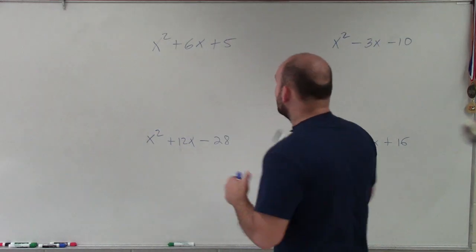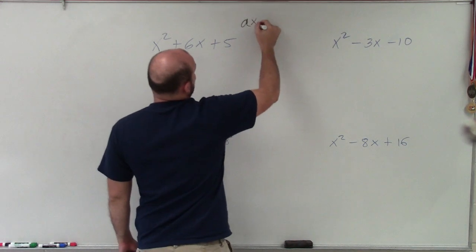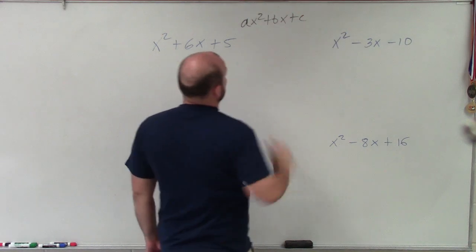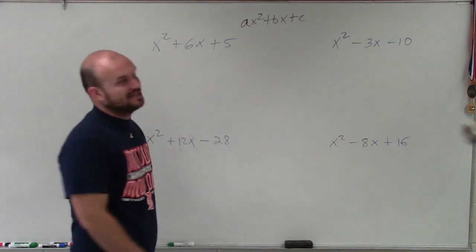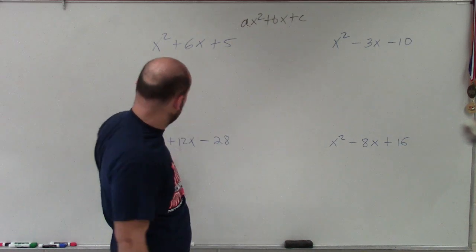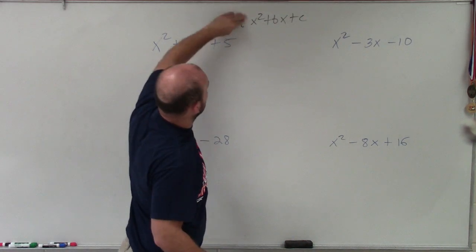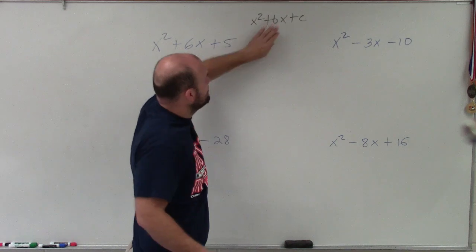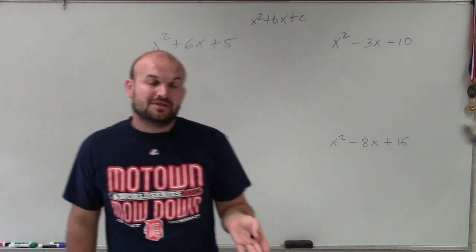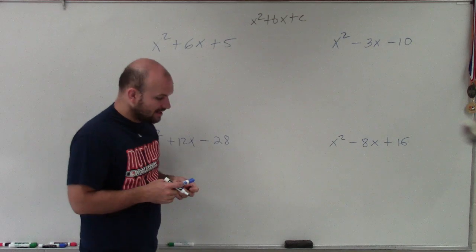To understand the diamond method, we need to understand the standard form of a quadratic, which is ax squared plus bx plus c. Since a is always 1 here, we're going to forget about a and just deal with b and c, where b is the coefficient of our linear term and c is our constant.